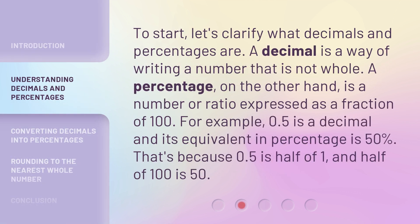To start, let's clarify what decimals and percentages are. A decimal is a way of writing a number that is not whole. A percentage, on the other hand, is a number or ratio expressed as a fraction of 100.